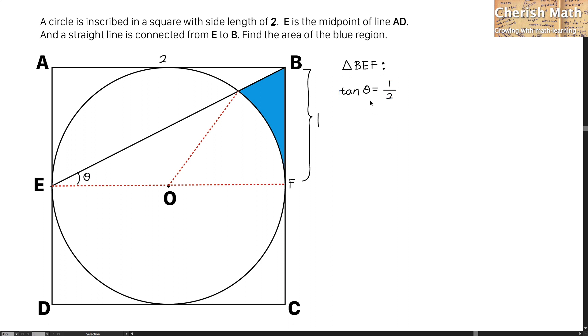That is tan theta equals 1, which is the line BF, divided by the line EF. This is 1 over 2. And the angle theta is the inverse of tan 1 over 2, and I am getting 26.6 degrees for this angle theta.